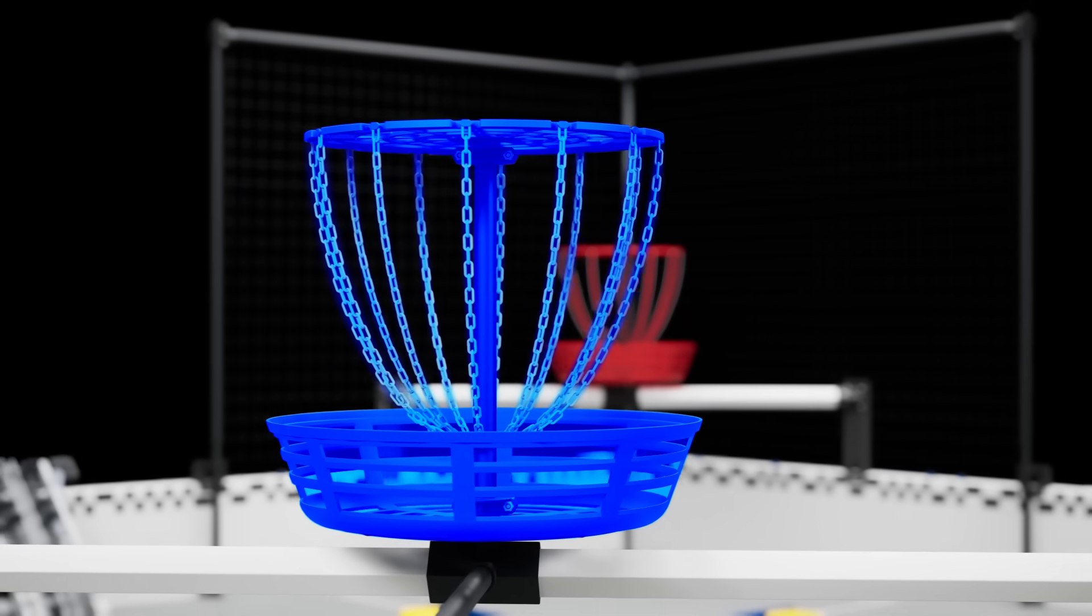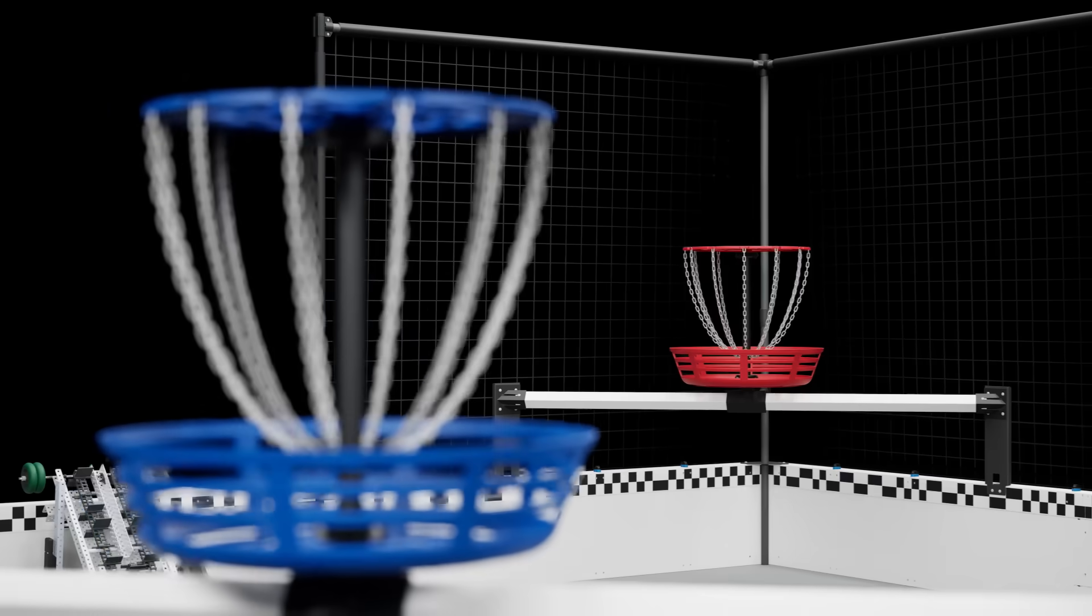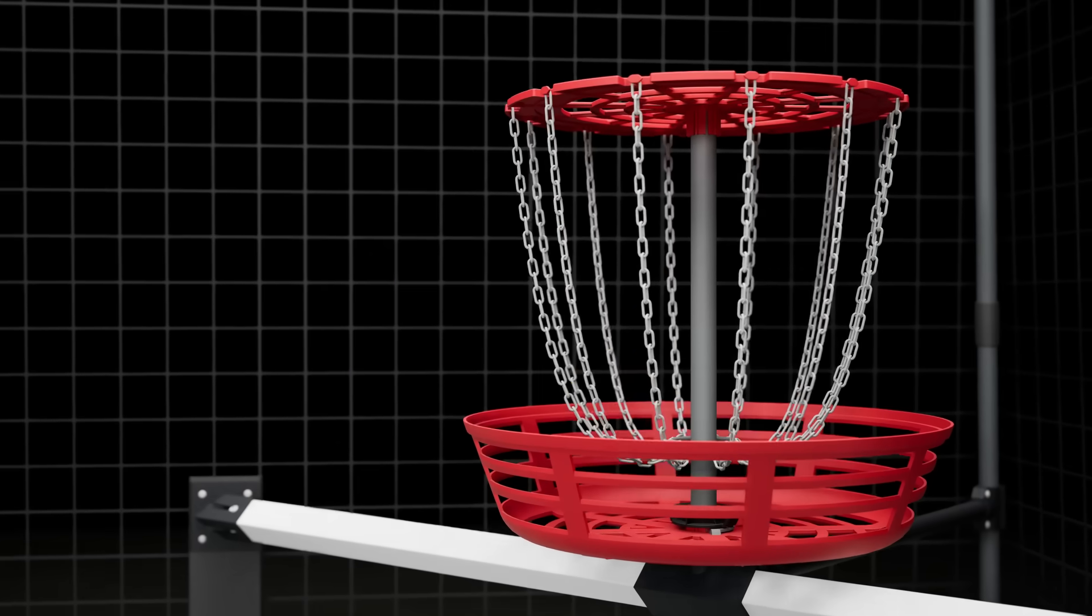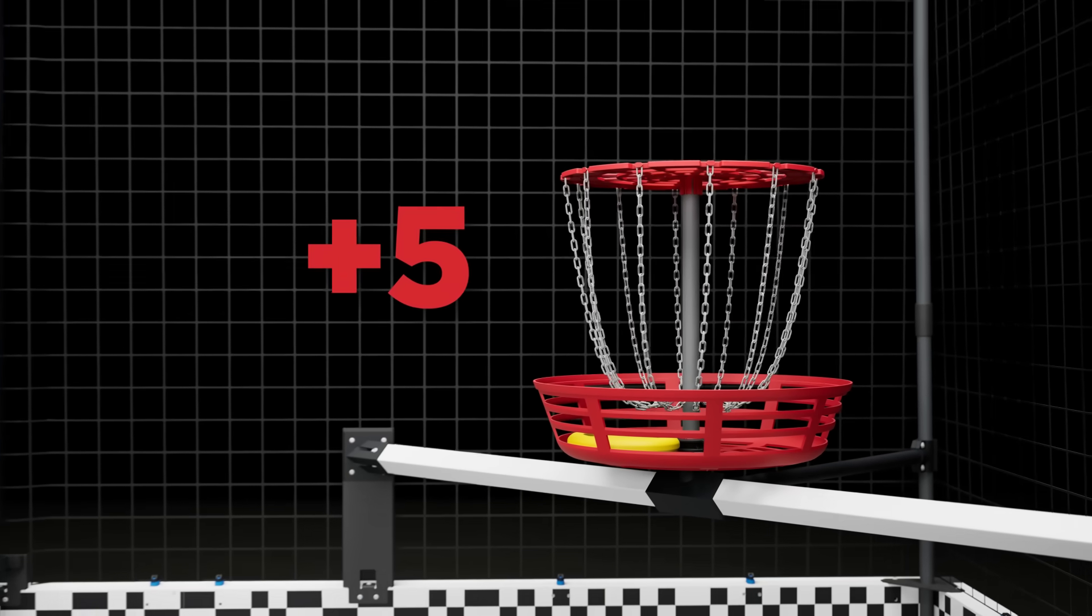Discs can be scored in the two high goals, one per alliance, at opposite corners of the field. Each disc scored in a high goal is worth five points.